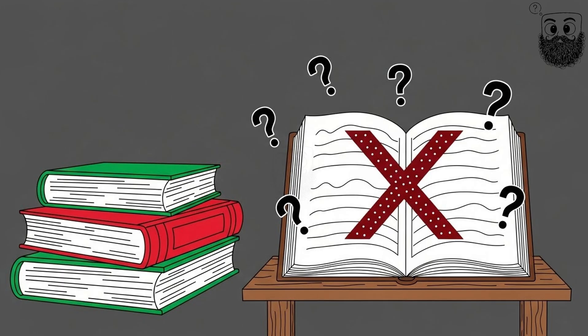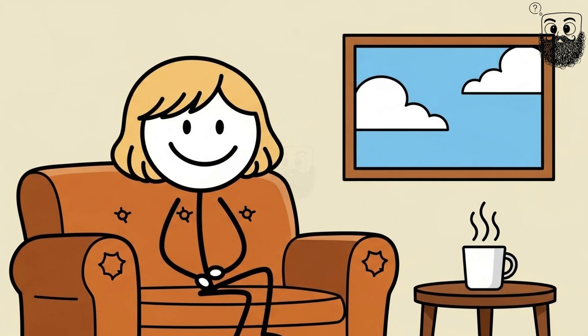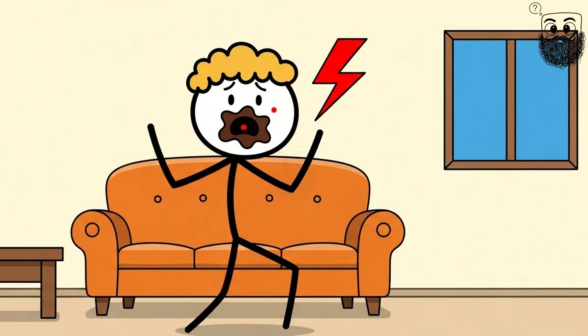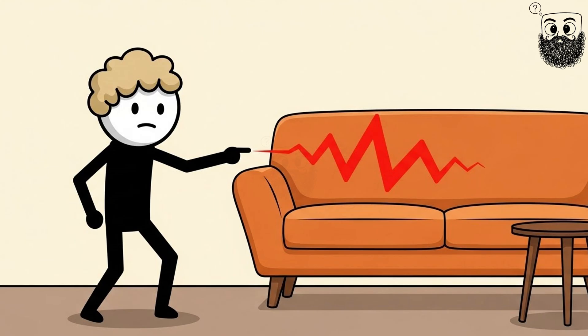6. Precordial catch syndrome. You're just sitting there, minding your own business, when BAM! A sharp, stabbing pain hits your chest like someone just jabbed you with a hot needle. It's usually on the left side in one very specific spot.